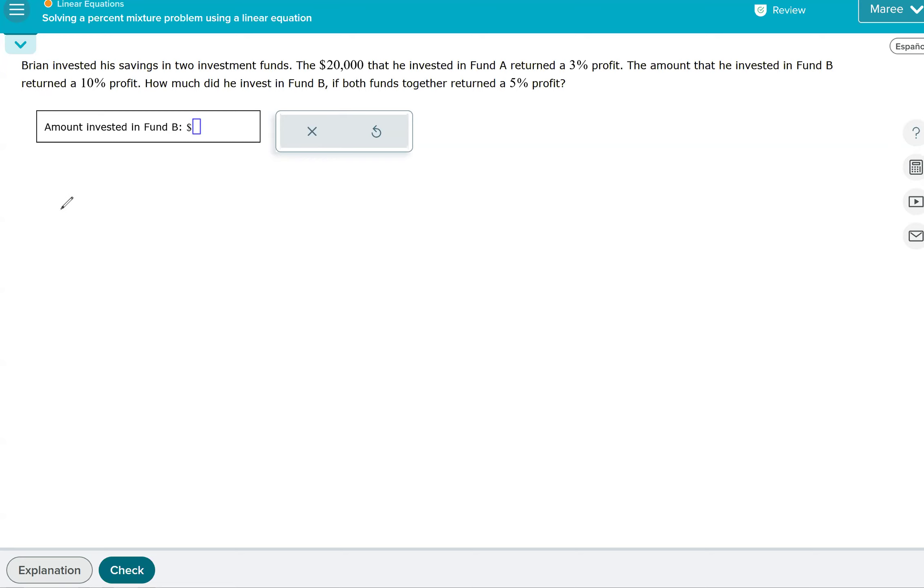So we're going to have fund A, fund B, and then the total. The amount that he invested, the percent that it returned, and the actual profit or the amount. So for A, $20,000 was invested in fund A. We don't know B, but we do know the total is X plus 20,000. The percentage of profit for A is 3%. I'm going to put the percent there so we don't forget to change that to a decimal. And B returned 10%, and together it was 5%.